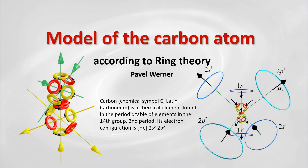In this video, we will present a model of the carbon atom according to the ring theory. We will show how the radii of atoms and their ionization energy can be determined quite accurately using the ring structure of atomic nuclei and the basic laws and properties of electromagnetic fields with the help of simple mathematics.